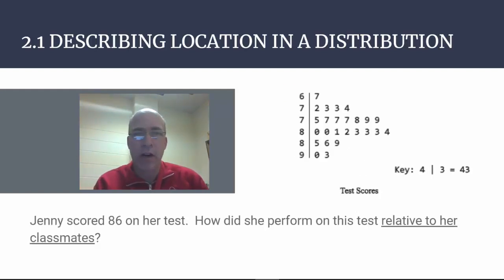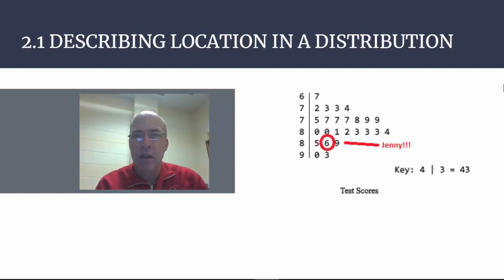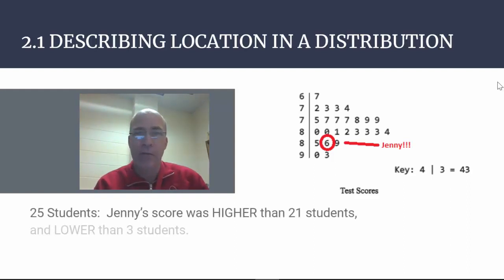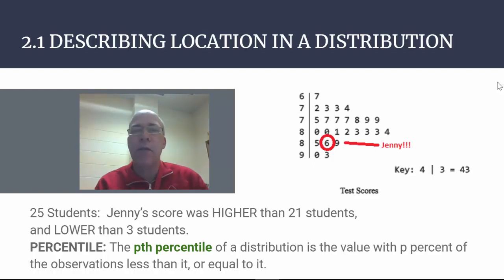We're going to take a look at some classroom test scores. This is a test in which Jenny scored an 86, and she would like to know how she performed relative to her classmates. We can see that she was better than 21 students, and three students had scores higher than Jenny. We can categorize what Jenny did here by using the idea of a percentile.